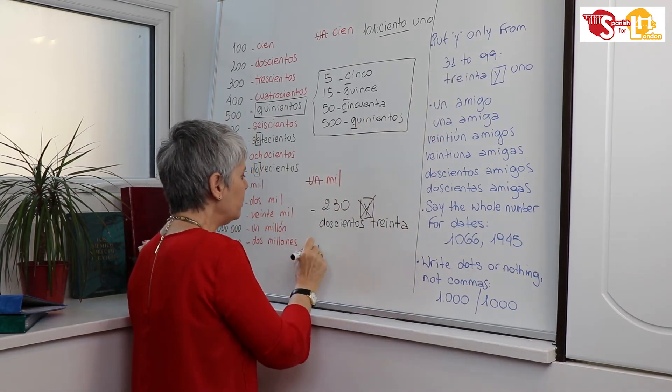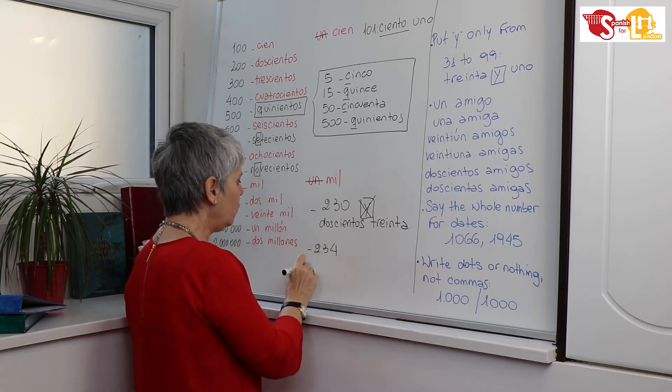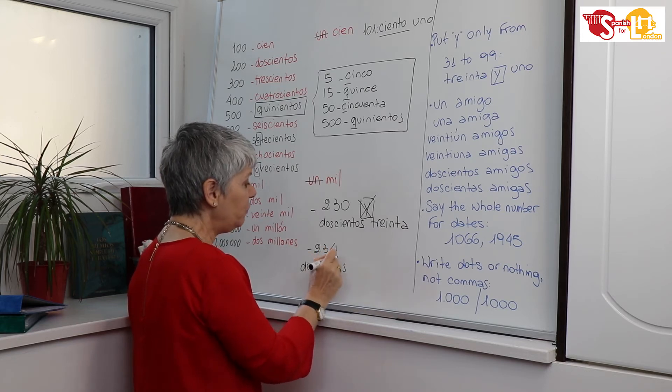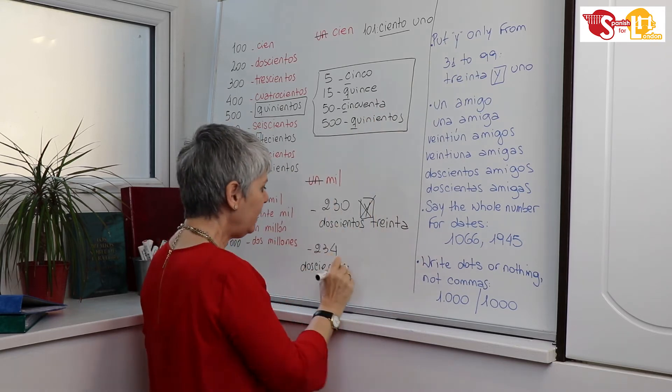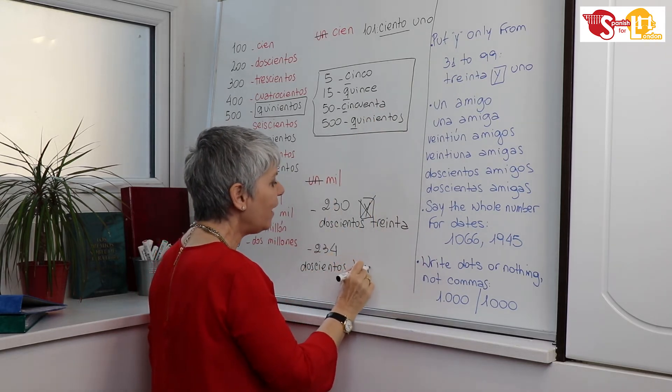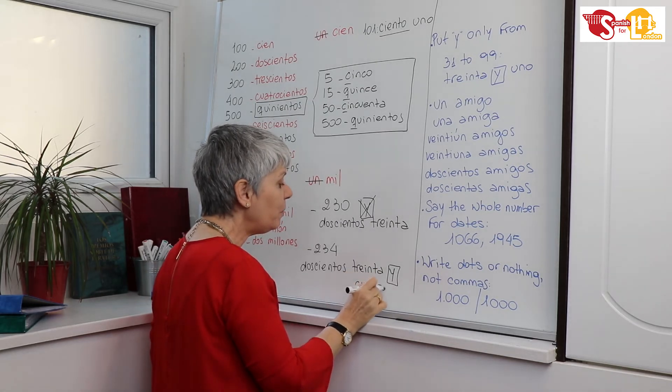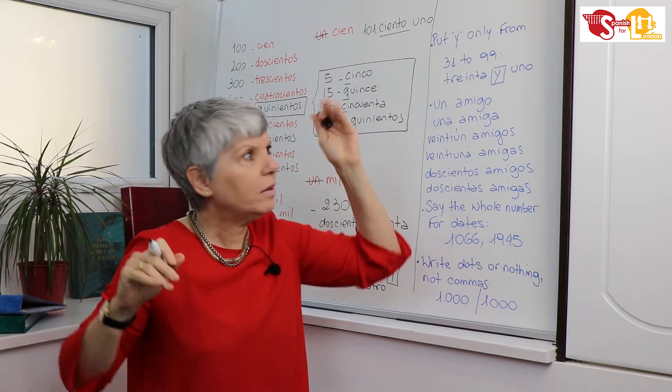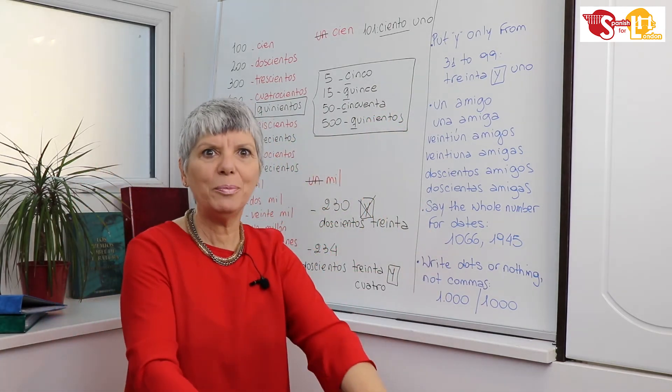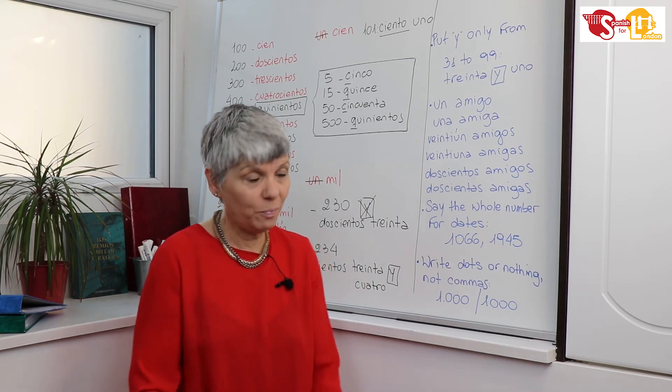You only put Y from thirty-one to ninety-nine. So if the number is, for example, two hundred and thirty-four, here I say doscientos, and now I have thirty-four which is comprised here, so I say treinta y cuatro. Okay? So remember this, when you are not sure about the Y, remember: thirty-one to ninety-nine, I put the Y. In other cases, I don't. That's all.